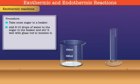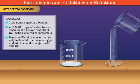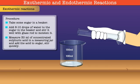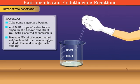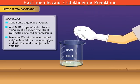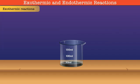Now measure 30 ml of concentrated sulfuric acid in a measuring jar and add the acid to the sugar. Stir quickly. See that the acid covers the sugar. Stand back and observe.